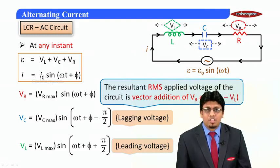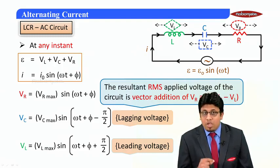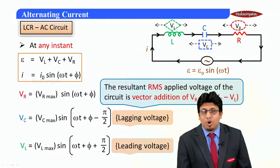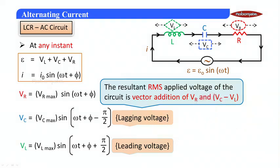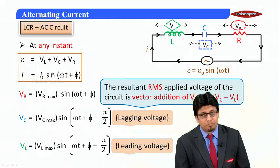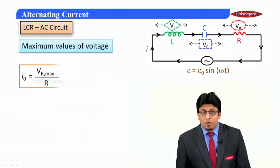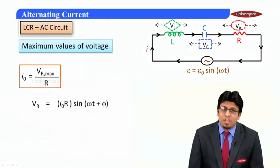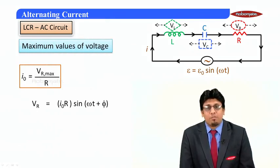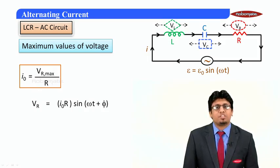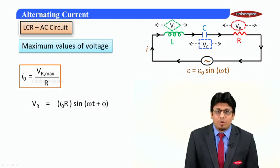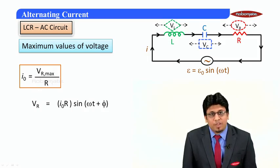What we can note here is that the value of phasor diagrams or the technique of phasor diagrams is well applicable for RMS voltage, which can be given by the resultant of VC minus VL and VR. Now to find out the maximum values we will use simply Ohm's law, which is given by V/R.